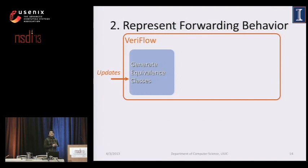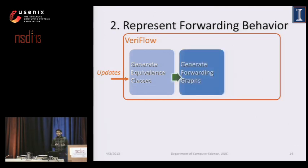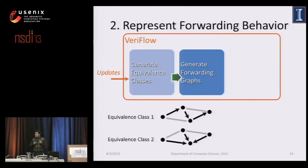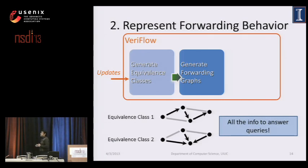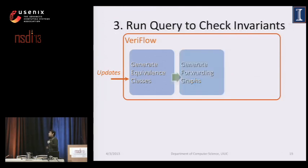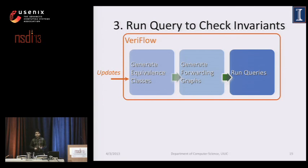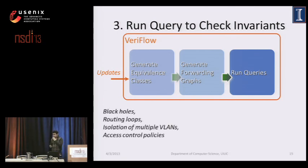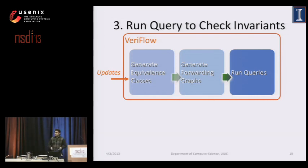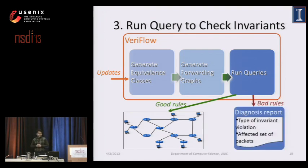The next step of VeriFlow is generating forwarding graphs representing the forwarding behavior of all affected equivalence classes. We traverse the trie structure again to find all rules that dictate the forwarding behavior of those equivalence classes and build the graph — one forwarding graph per affected equivalence class. These forwarding graphs contain all the information needed to answer different queries. At the last step, we run custom queries to look for violations of network invariants such as absence of black holes, loops, or access control violations. Good rules are sent immediately to the network; bad rules generate a diagnosis report.